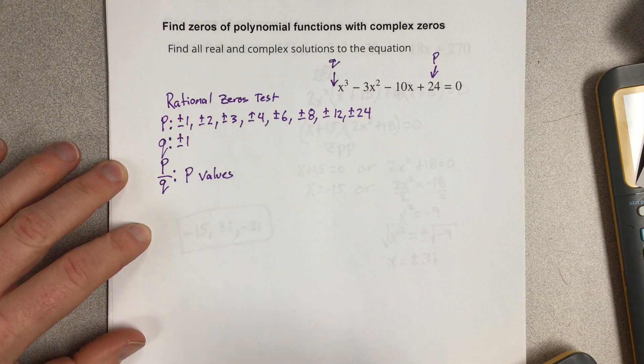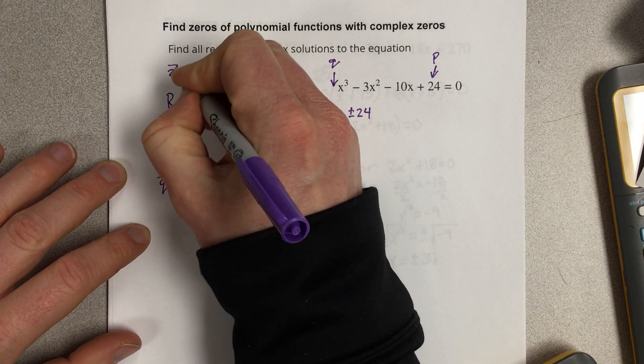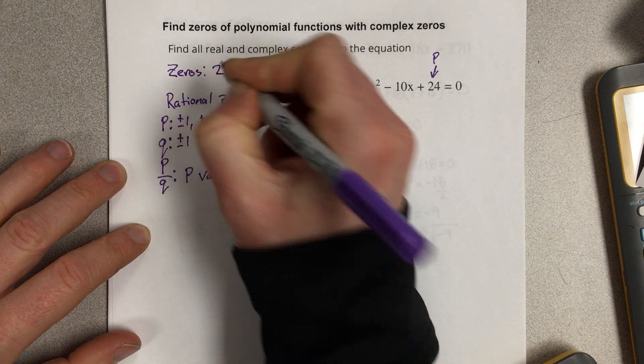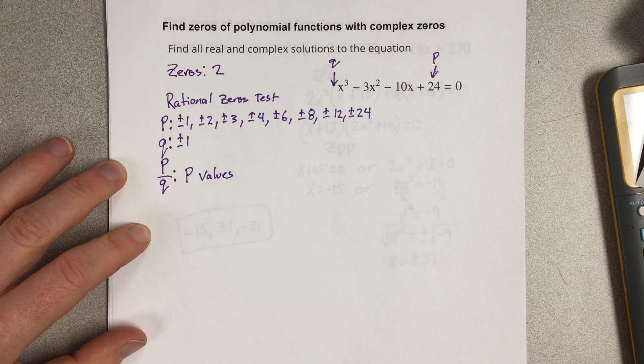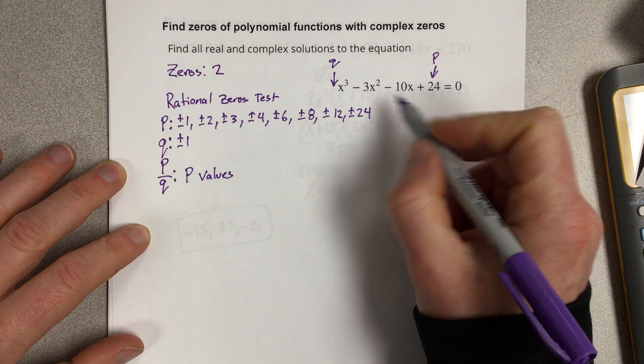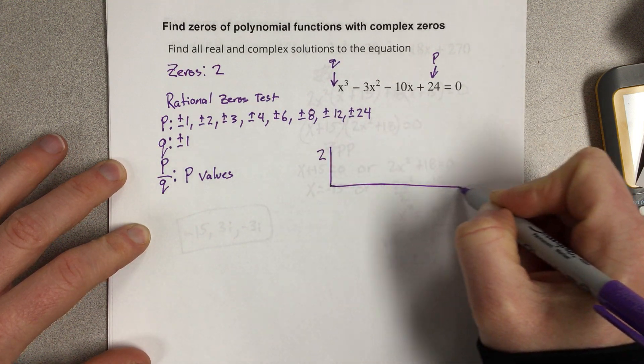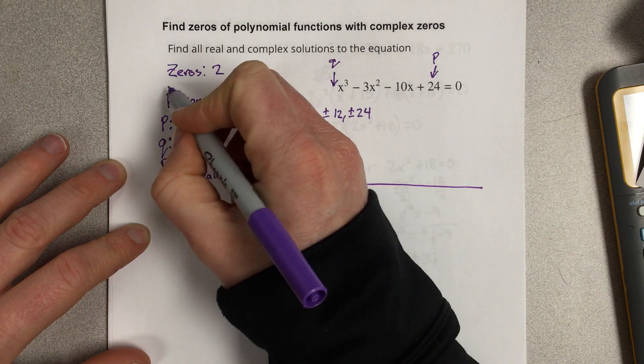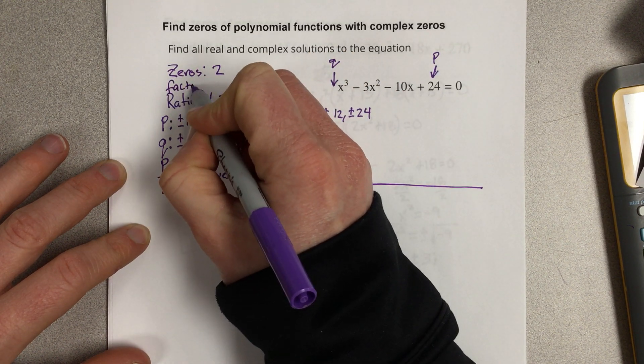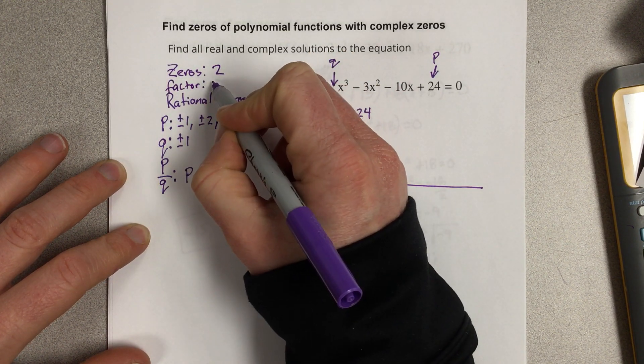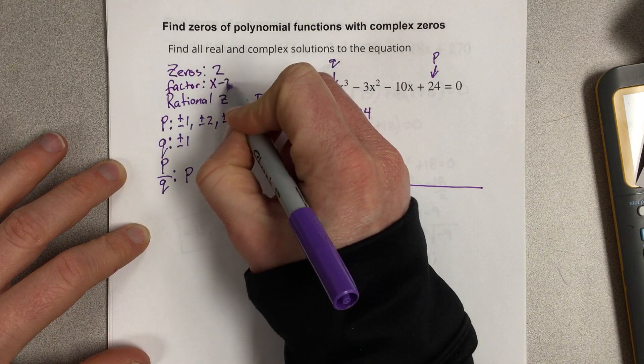So I'm going to stop right there and say that one of my zeros is 2. Now I'm going to use synthetic division to find the other factors. So I'm going to say that 2 is the zero here. And remember, the factor, if the zero is 2, the factor for this would be x - 2.